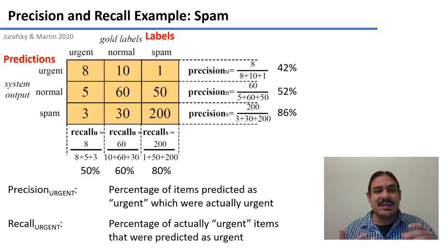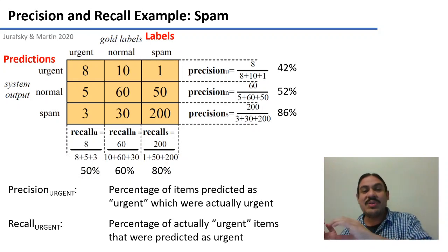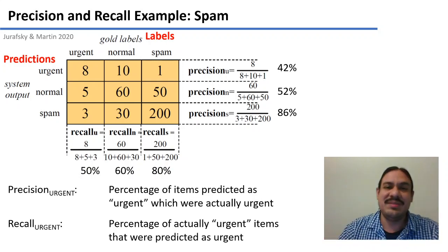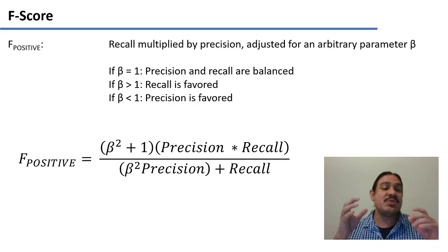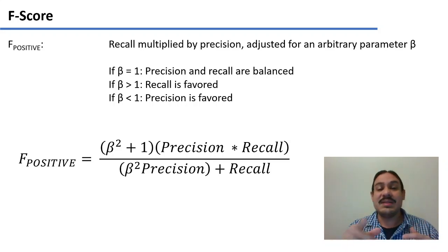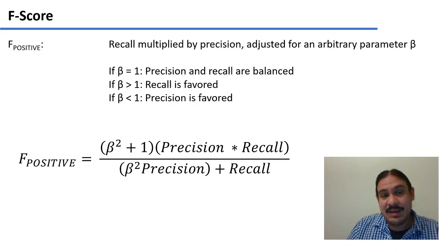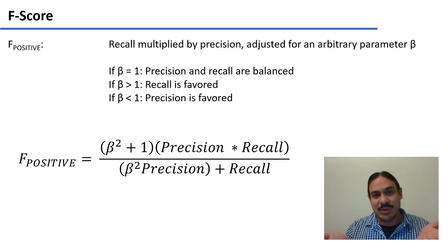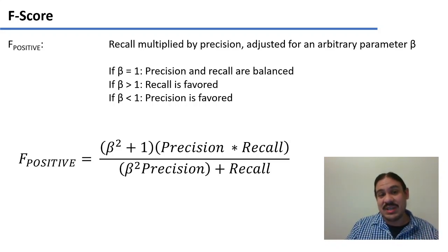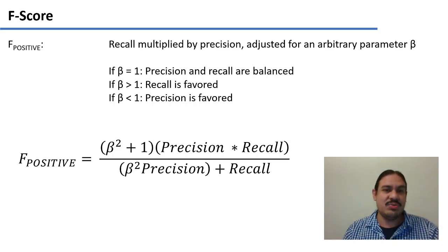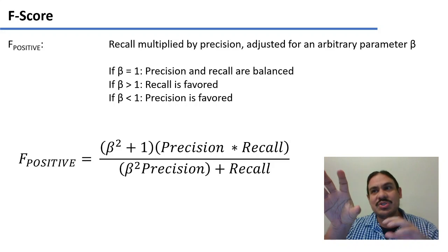So in summary, precision is how many of the things I labeled as spam are actually spam, and recall is how many of the things that were actually spam did I label as spam. There's one final measure called the F score, which is an attempt to incorporate both precision and recall into a single number. There's a parameter called beta which can be adjusted depending on who you want to give priority: higher beta values prioritize recall, lower beta values prioritize precision. Most usually people choose beta equal to 1, which means taking both equally into account.